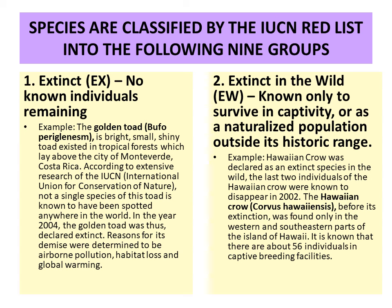Number 1 is extinct — no known individual is remaining on this earth. For example, the golden toad (Buffo), a bright, small, shiny toad found in the forests of Costa Rica. According to IUCN, not a single individual of this species is now spotted; it was declared extinct in 2004.